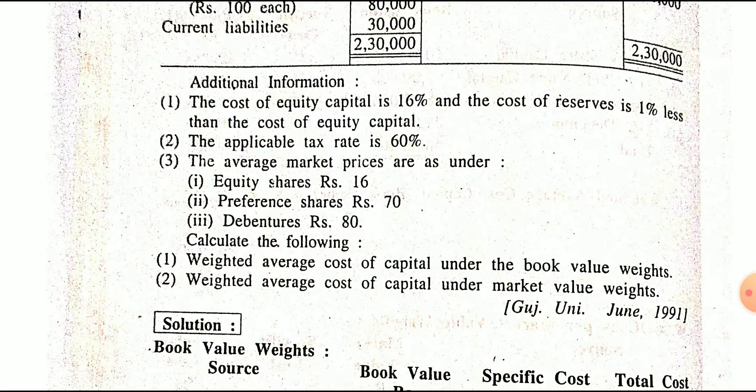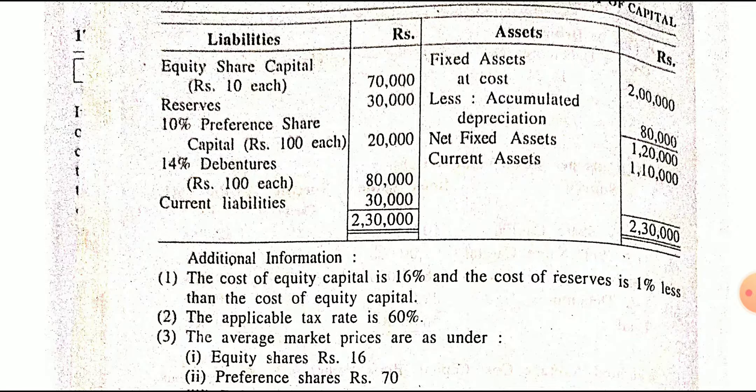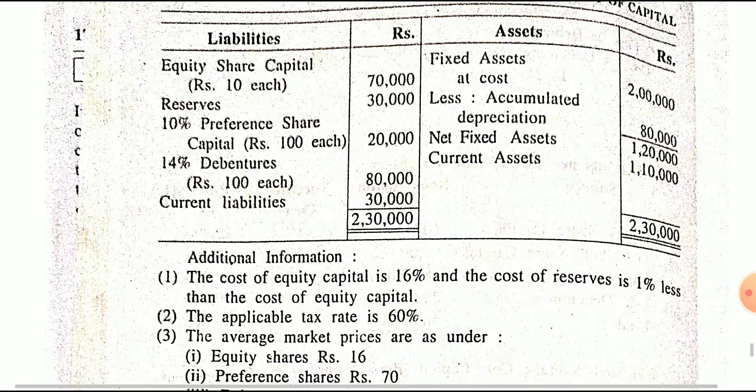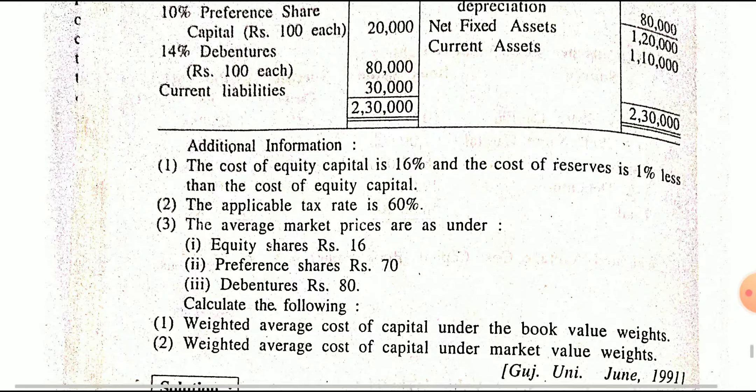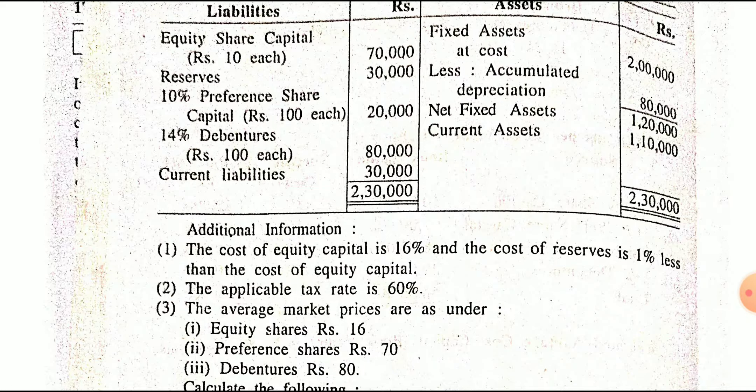If no information is given about reserve, then the same specific cost as equity is taken for reserve. Applicable tax rate is 60%. Average market price is given in a table showing book value and market price: equity share book value per share is 10, market price is 60. Preference share book value is 100, market price is 70. Debenture book value is 100, market price is 80. You have to calculate WACC on the basis of book value and market value.